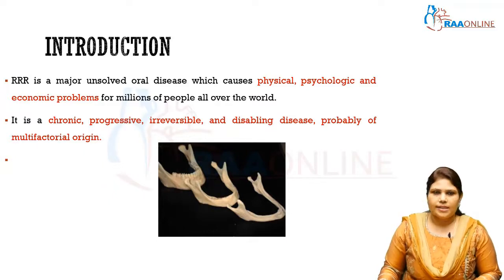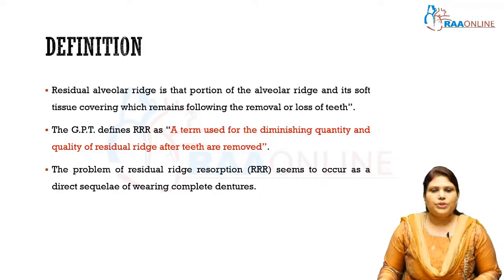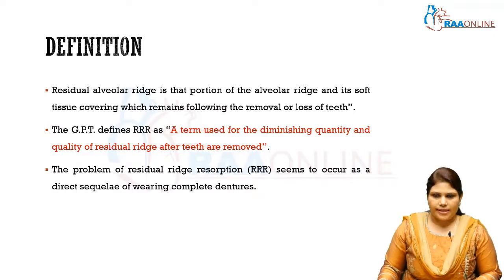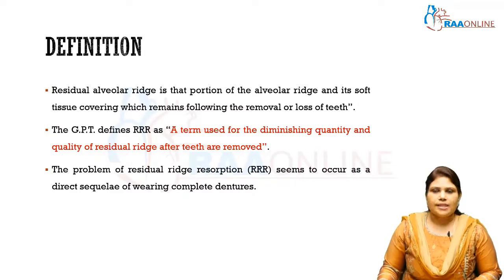irreversible and disabling disease, probably of multifactorial origin. The residual alveolar ridge is defined as the portion of the residual alveolar ridge and its soft tissue covering which remains after the removal or loss of teeth. The Glossary of Prosthodontic Terms defines residual ridge resorption as a term used for the diminishing quality and quantity of the residual ridge which remains after teeth are removed. This problem seems to occur as a direct sequelae of wearing complete dentures.